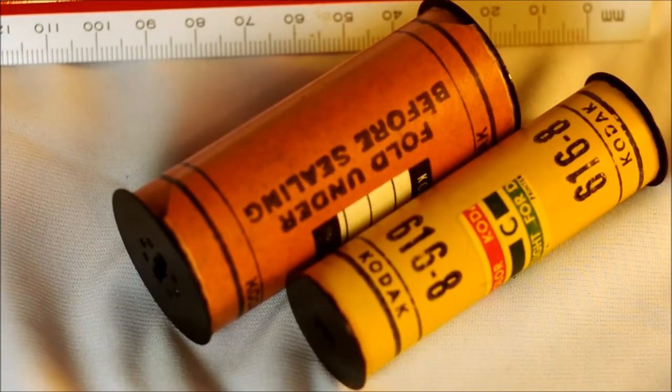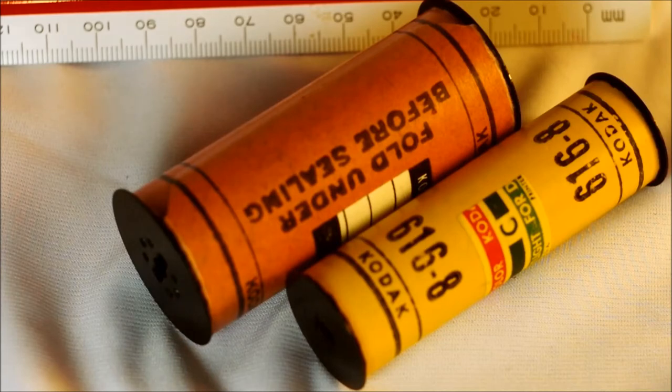116 and 616 aren't made anymore. They haven't been made in a long time. But like I said, if you get 70 millimeter film, you can re-spool it. But you'll have to find old paper backing, which is increasingly difficult, unfortunately. It's harder and harder to come by, and it's older, so it's a little bit more brittle and more fragile.